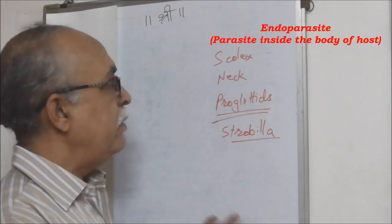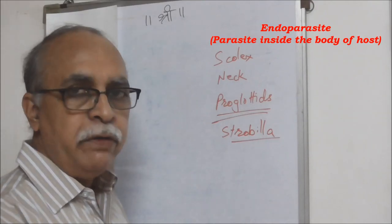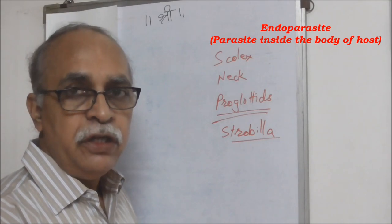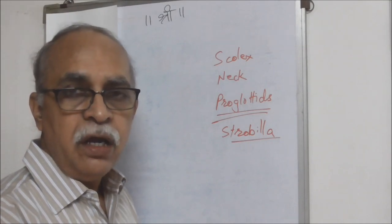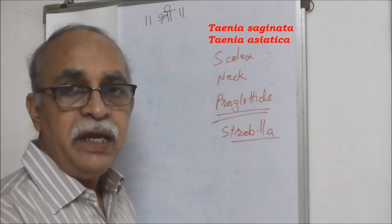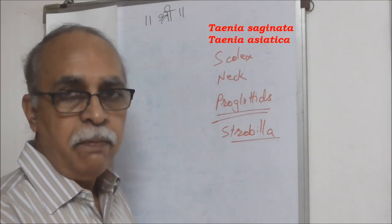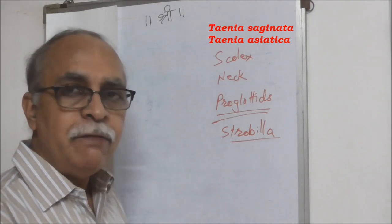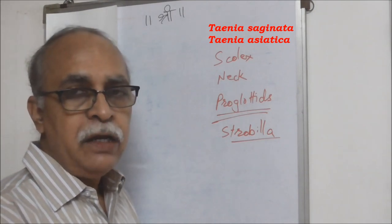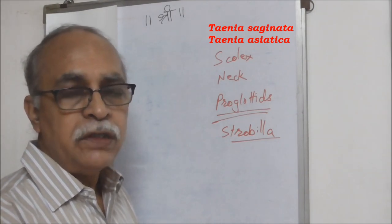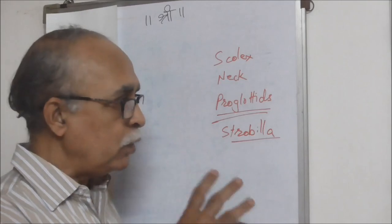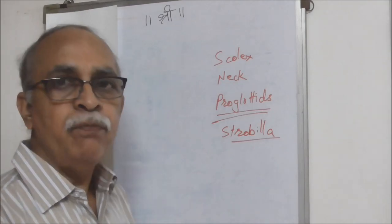There are two other species under Taenia — Taenia saginata and Taenia asiatica — but Taenia solium is the one mainly known to cause infections in human beings, so we will focus upon that.